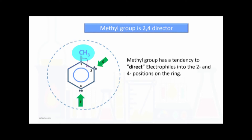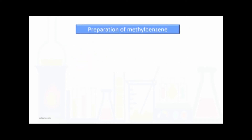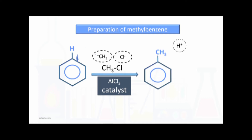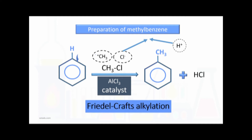The electrophiles replace hydrogen at the 2 and 4 positions. Preparation of methylbenzene: it is prepared from benzene using chloromethane in the presence of aluminum chloride catalyst. Chloromethane is broken down to an electrophile, and the pi electrons of benzene are attracted towards the electrophile, producing methylbenzene. HCl and AlCl3 are released as by-products. This is called Friedel-Crafts alkylation, which is a type of electrophilic substitution reaction.